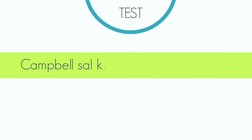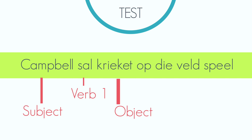Let me give you a sentence and we can then identify the different sections of STOMPY. CAMPBELL SAL KRIEKET OP DIE VELD SPEEL. It is very important to note that not every sentence has to have every part of STOMPY. We can now see that CAMPBELL is the subject, SAL is verb 1, KRIEKET is the object, OP DIE VELD is the place, and SPEEL is verb 2.